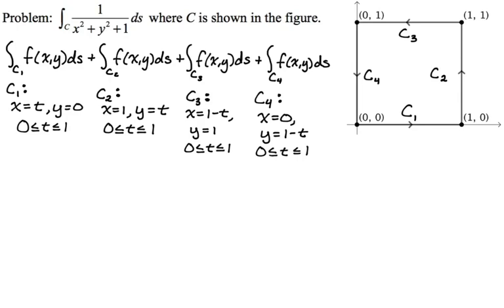Now I'm going to calculate ds for each path. ds is the magnitude of r prime of t dt, so I need dx/dt and dy/dt, square them, add them, take the square root, and put dt after. For c1: dx/dt is 1, dy/dt is 0, so ds is just dt. For c2: dx/dt is 0, dy/dt is 1, so ds is dt again. For c3: dx/dt is negative 1, dy/dt is 0; since you're squaring, negative 1 squared is 1, so ds is dt. The same applies to c4. In each case, ds equals dt, which makes our life a lot easier.